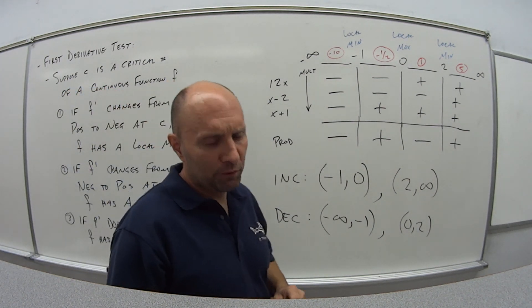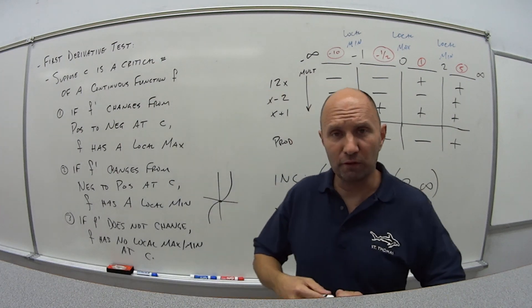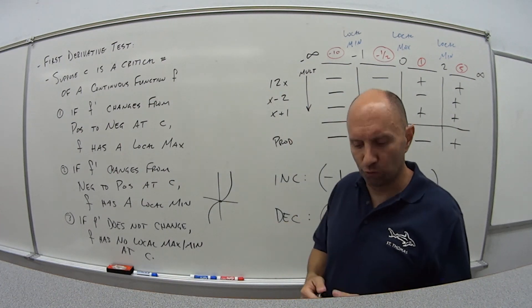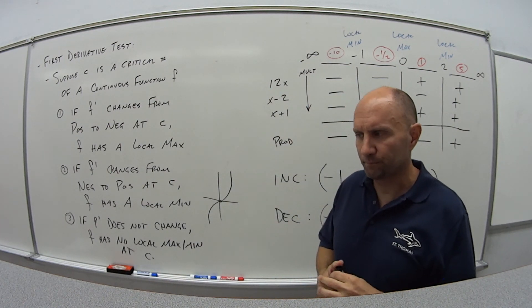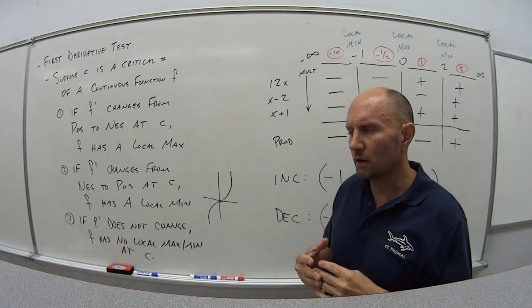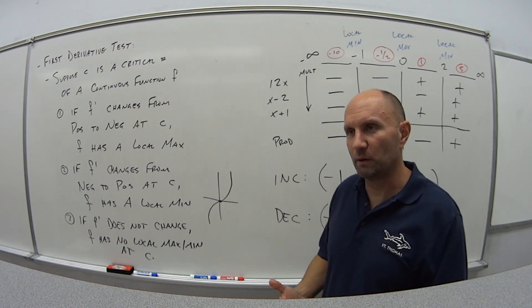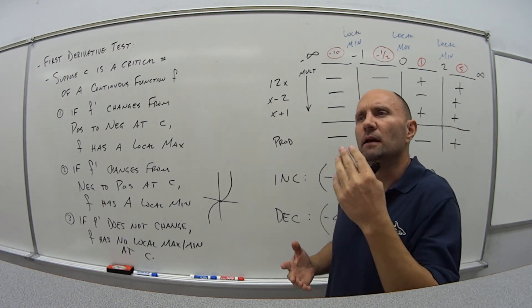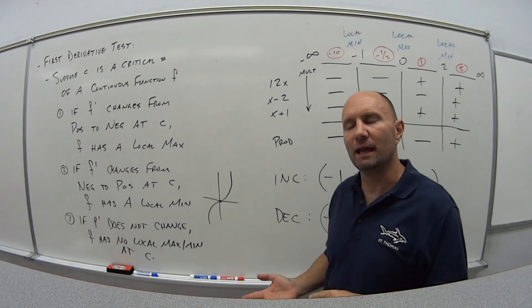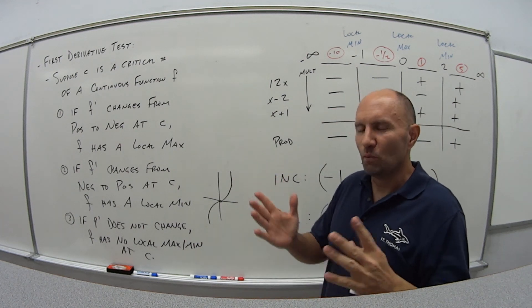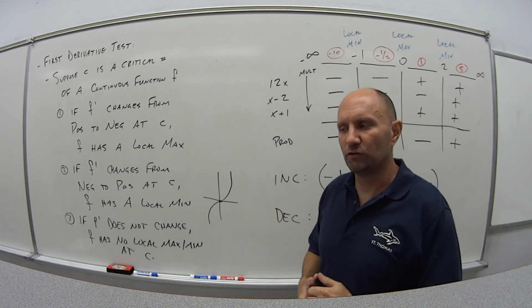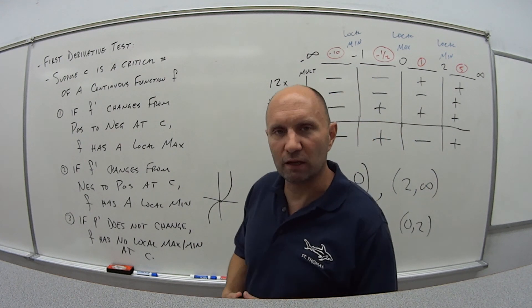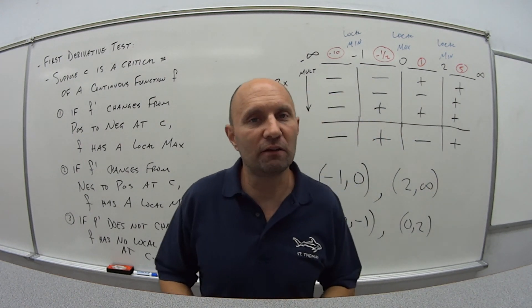That wraps up the first video looking at the first derivative. If we're given some information — is the slope positive or negative — what does that tell us about the graph? Come on back for the second video, which looks at the second derivative of a function.